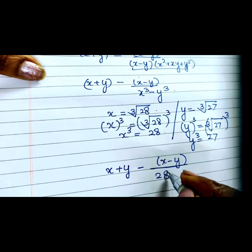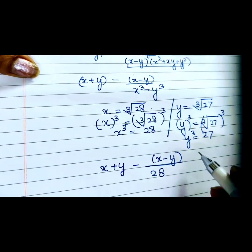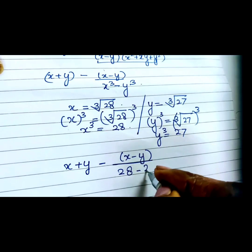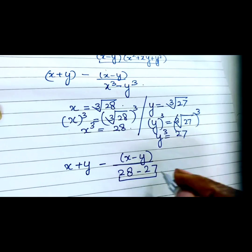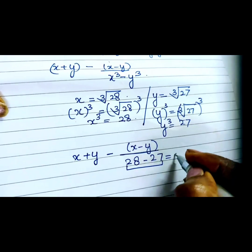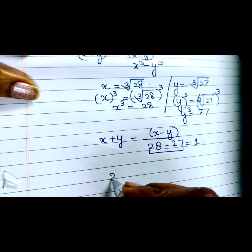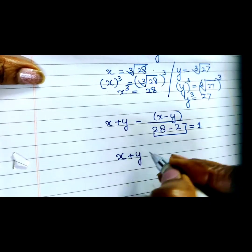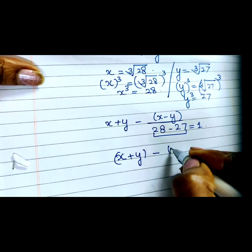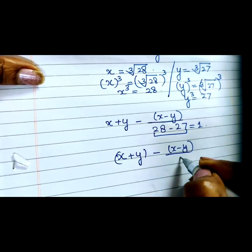minus y³, which is 28 minus 27, which equals 1. So what we get here is (x + y) - (x - y) over 1.